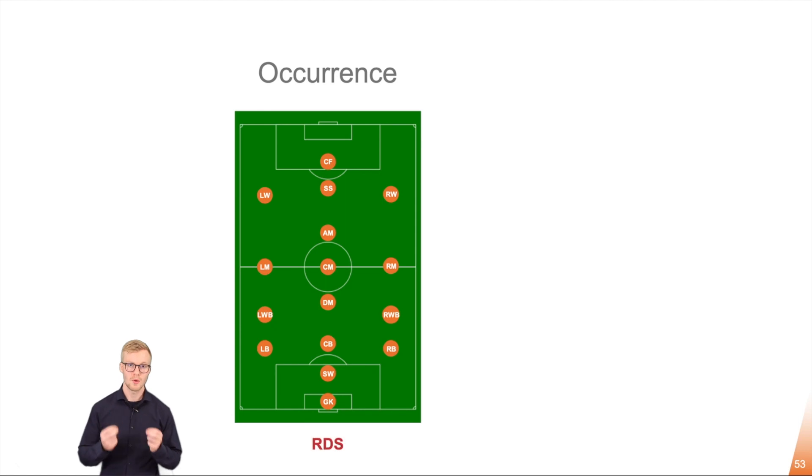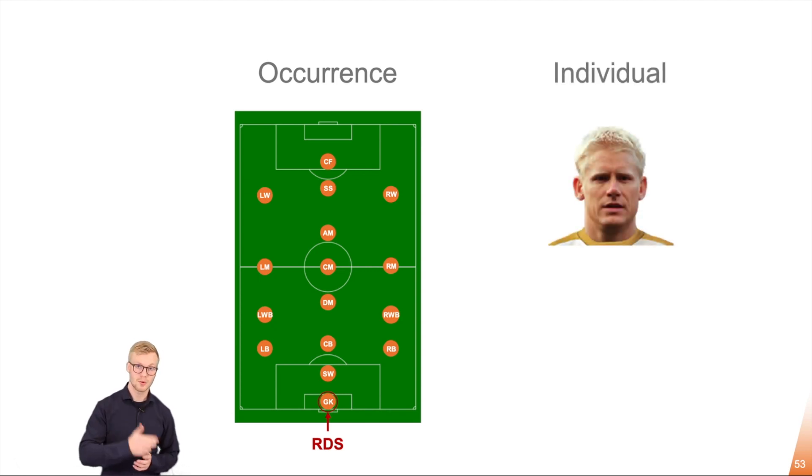RDS can only see the role of the player. So for example here the goalkeeper. We can then take an individual Peter Schmeichel here and put him in on the goalkeeper's place and he will fulfill that role.